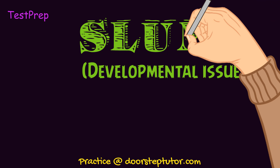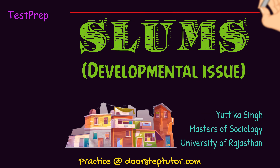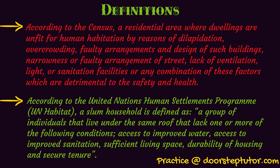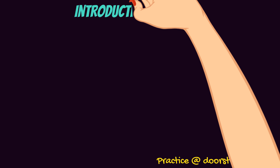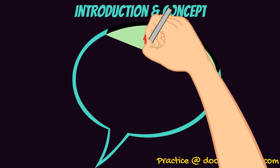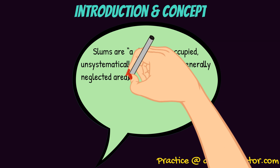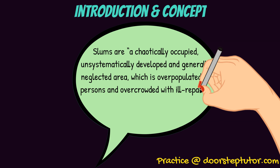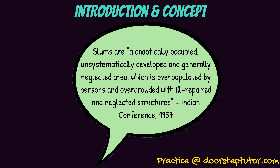Under the topic Developmental Issues, we will be discussing about slums today. Here are some definitions given by Census and United Nations — you can just take a look. According to the Indian Conference of 1957, slums are a chaotically occupied, unsystematically developed and generally neglected area, which is overpopulated by persons and overcrowded with ill-repaired and neglected structures. We've got a basic idea of what slums are.